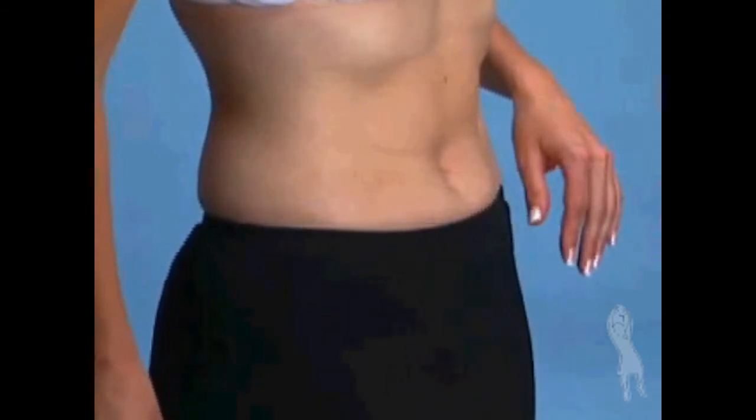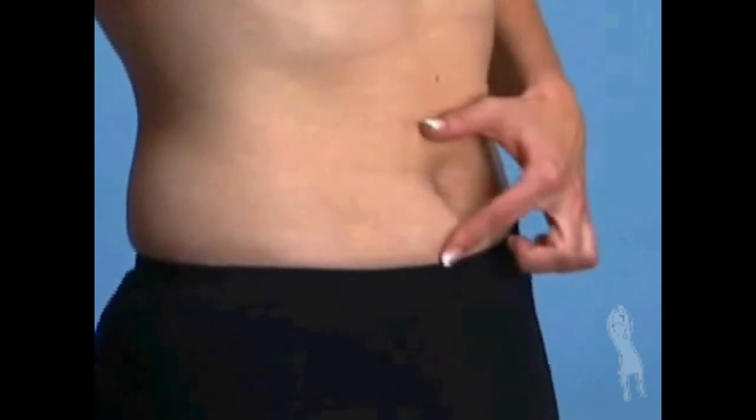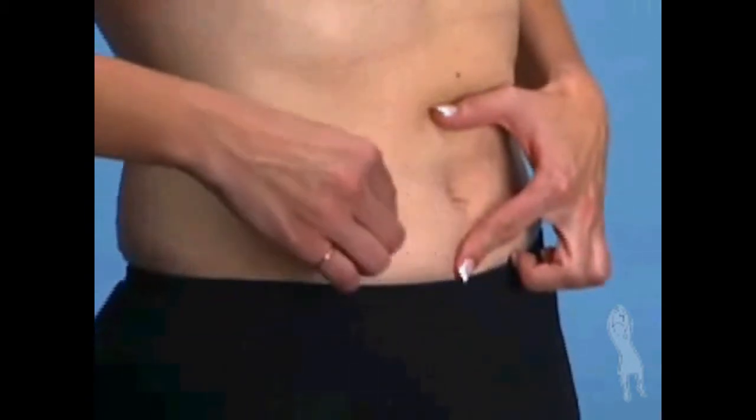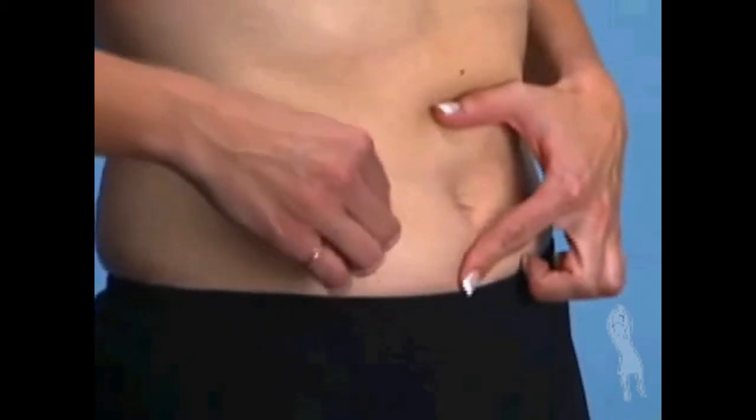The best place for the subcutaneous injection is the abdomen in the area just below or to the side of the belly button. Change your injection site a little bit with each injection to decrease your chances for a skin reaction.